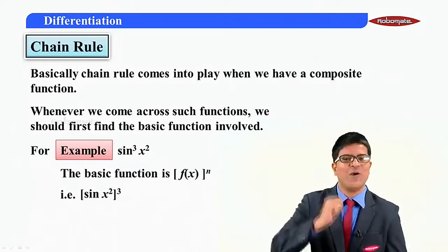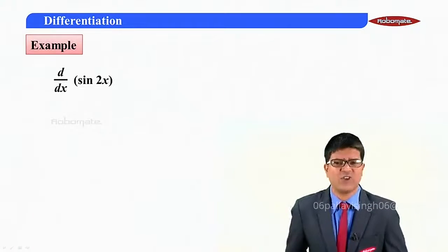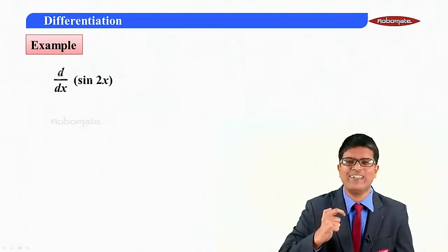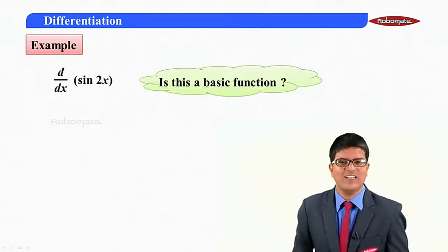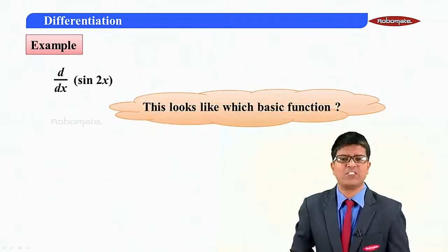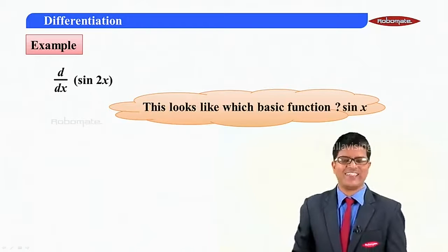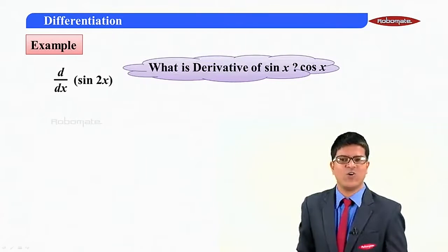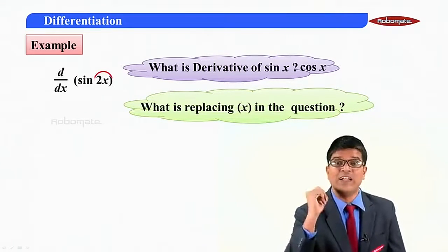Let us understand the chain rule with the help of some problems. Let us start with the first function: d by dx of sin 2x. In chain rule, we ask a set of questions to help understand composite functions. First question: is this a basic function? The answer is no. So, to which basic function can we compare it? This looks like sin x.